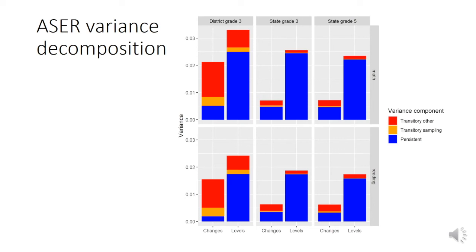This final graph shows the formal results from the variance decomposition, and there are three main takeaways. First, at the state level, the majority of variance is persistent — meaning you can be relatively confident when comparing states using ACER data. Second, the story changes when you look at changes in state levels or move to district data: a much larger proportion of variance is transitory, so you have to be more careful when comparing changes in state levels over time, and really careful with changes in district levels over time. Third, across all categories, sampling variance makes up a very small portion of that transitory variance.